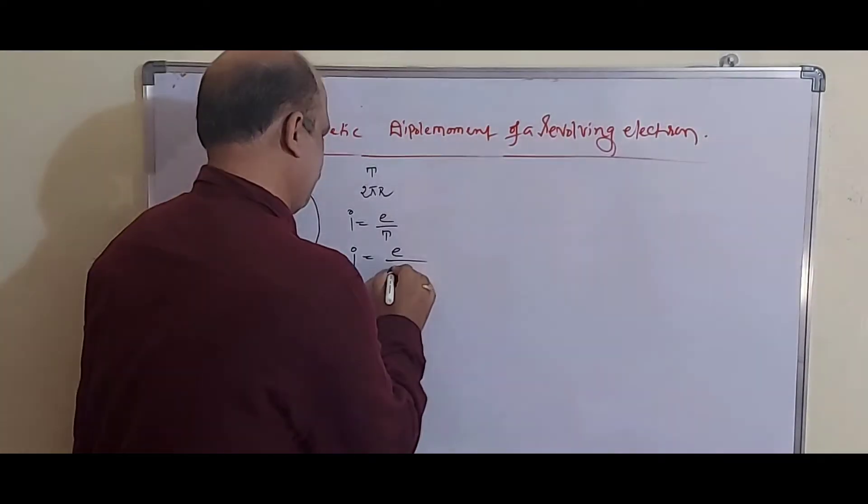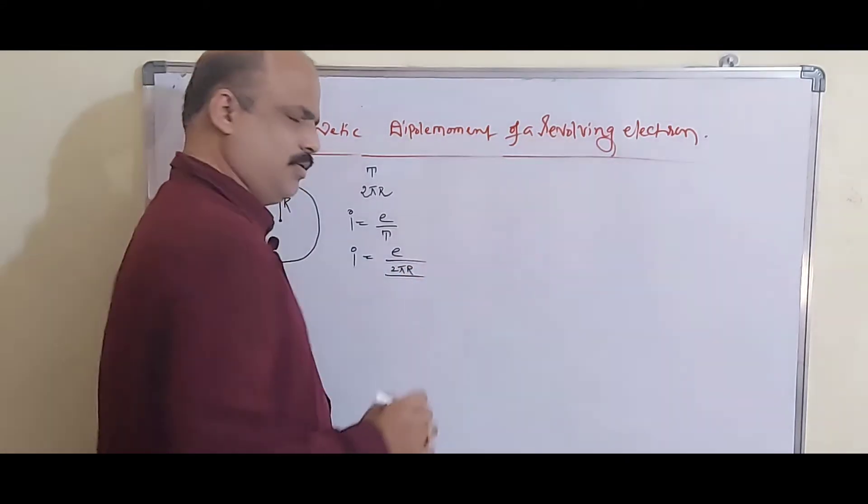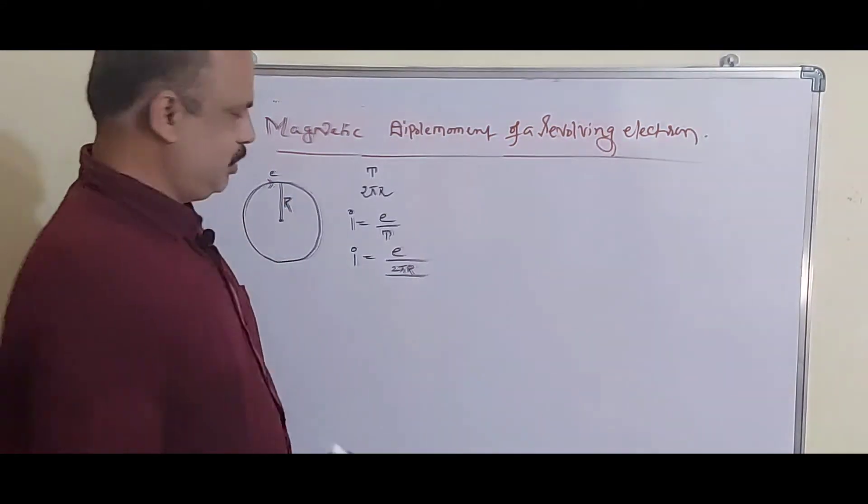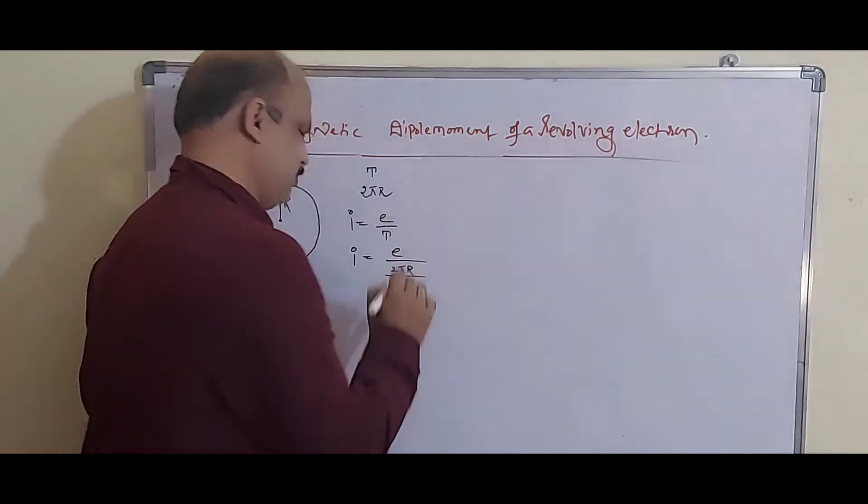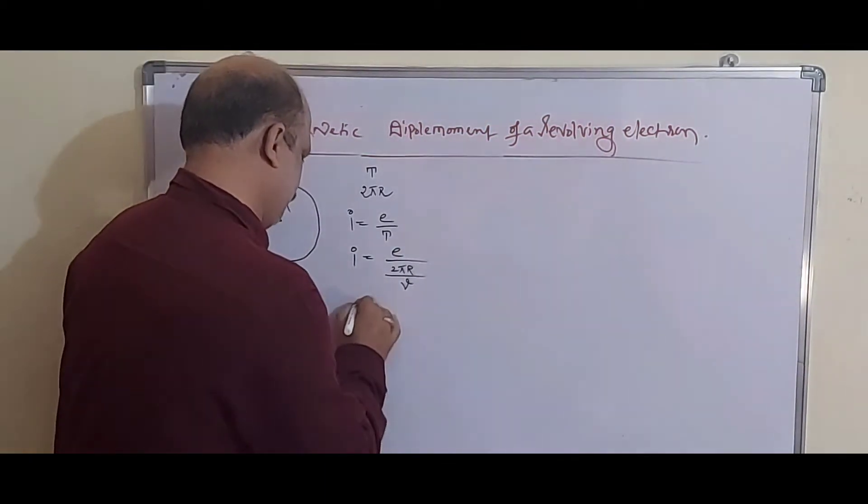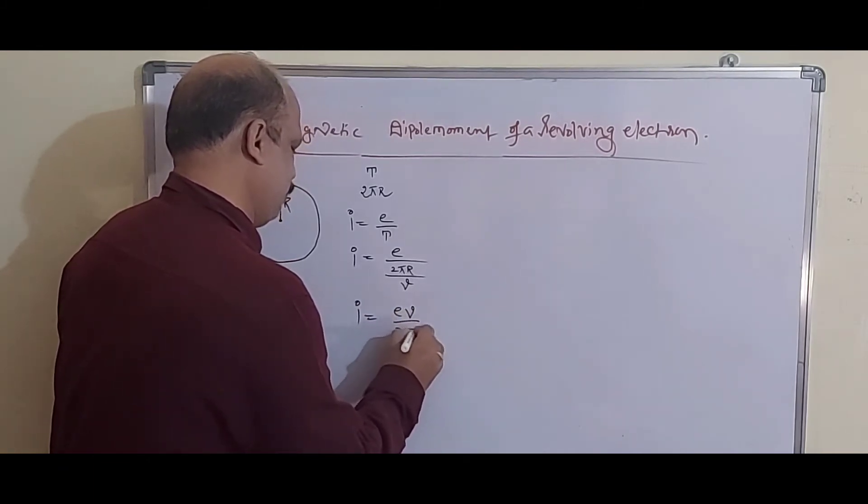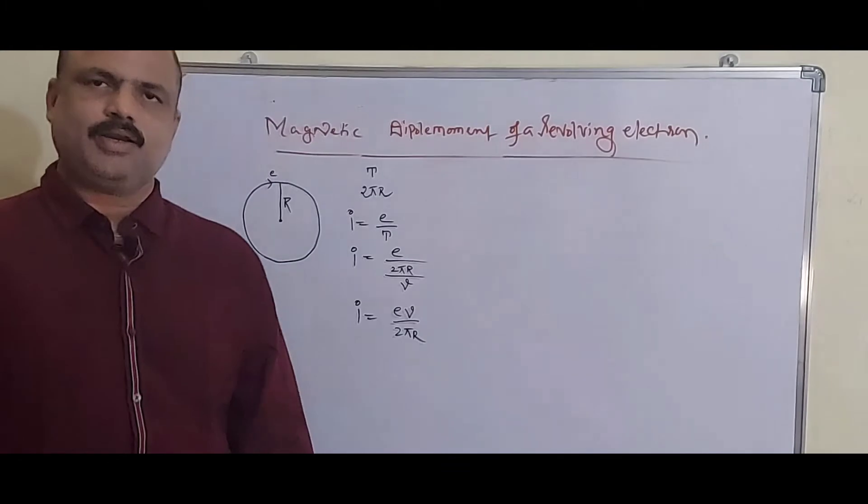Time equals distance traveled by the electron in one time period divided by its velocity. So here we write I equals Ev by 2πr.